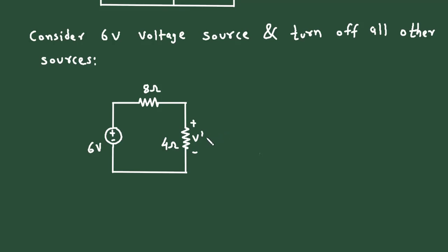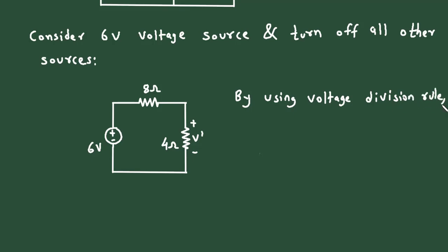We can easily find the value of V prime using the voltage division rule. According to the voltage division rule, V prime equals 6 volts multiplied by 4, divided by 4 plus 8.